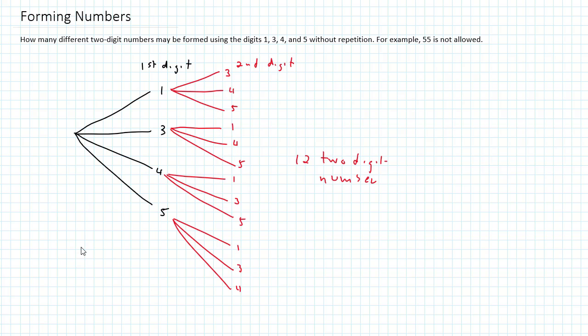Now we could figure this out without drawing the tree. If we realize for the first digit there were four possibilities, and for the second digit there were three possibilities, multiplying those two together gives us the same 12 that we got above.